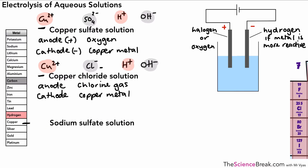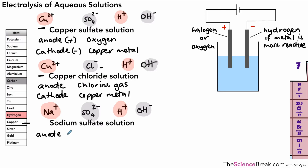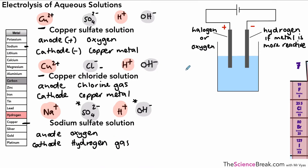One final example — you should be able to have a go yourself by now. The ions are: sodium (Na⁺), sulfate (SO₄²⁻), H⁺, and OH⁻. Sulfate and hydroxide are negative; sodium and hydrogen are positive. At the anode, the rule is we get the halogen or oxygen — there is no halogen present, just sulfate and hydroxide — so we get oxygen gas, which comes from the hydroxide ions. At the cathode, sodium is way up the reactivity series, much more reactive than hydrogen, so we get hydrogen gas produced at the negative electrode, seen as bubbles.